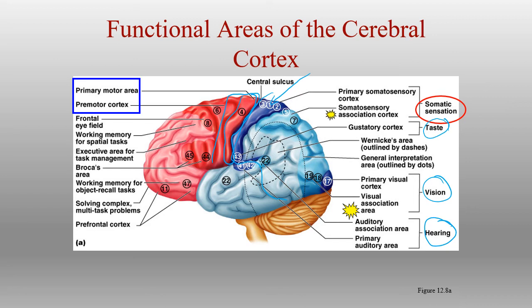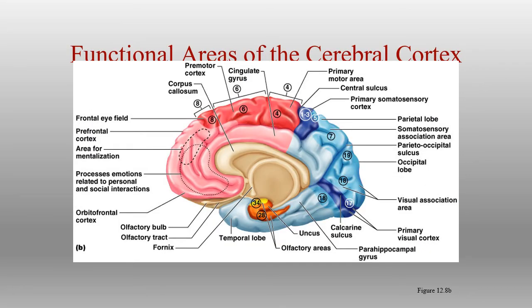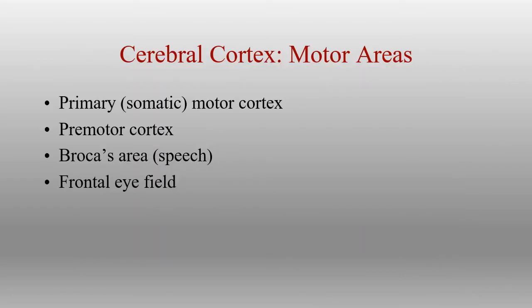Smell is deep within and not visible in this particular picture, but the olfactory areas are found on the underside of the temporal lobe. For processing information: the primary motor cortex is the final plan for what we're going to move; the premotor cortex is developing that plan. Broca's area and the frontal eye fields are specialized motor areas — Broca's area specifically for speech, and the frontal eye field for coordinating movement of the two eyes.